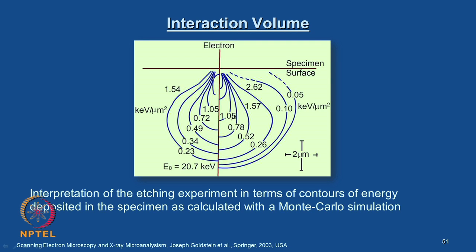As mentioned, the left-hand side contours are based on etching experiments and the right-hand side contours are based on Monte Carlo simulations estimated numerically. It is very interesting to note the kind of energy variations from the surface to the bottom, and we will have some idea about how these inelastic scattering signals are useful in obtaining information about materials in SEM — like secondary electrons, backscattered electrons, and characteristic X-rays.